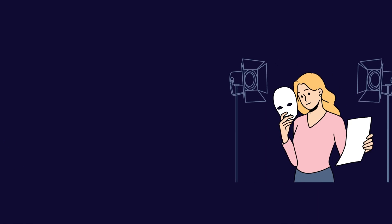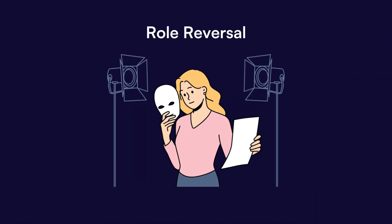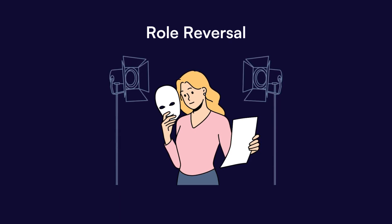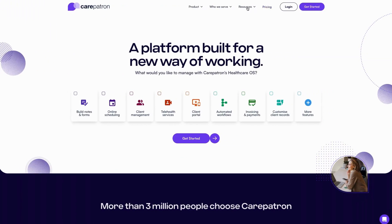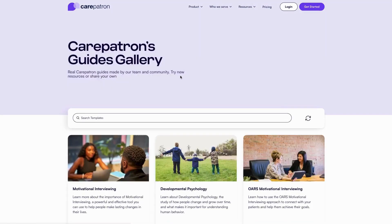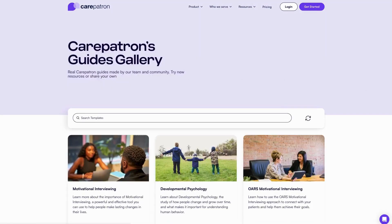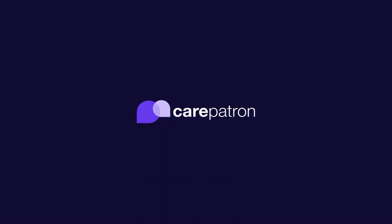Role Reversal: Empathy is an essential ingredient for a healthy relationship and it can be nurtured by experiencing your partner's perspective. One way to achieve this is by switching roles in a specific scenario. These are just a few examples of Imago Therapy exercises and techniques. To learn more about Imago Therapy, go to the CarePatron website or click on the link in the description. We have a range of guides and articles to help you learn more about different therapy techniques to incorporate into your practice.